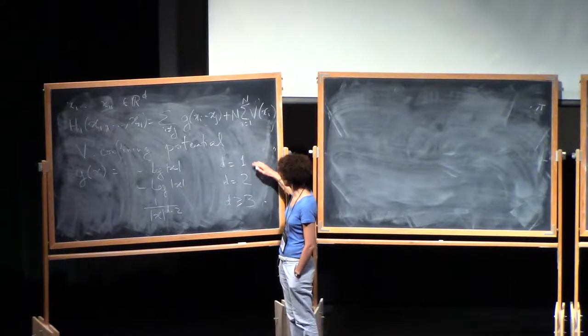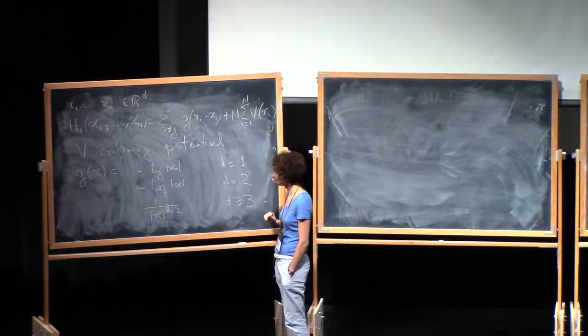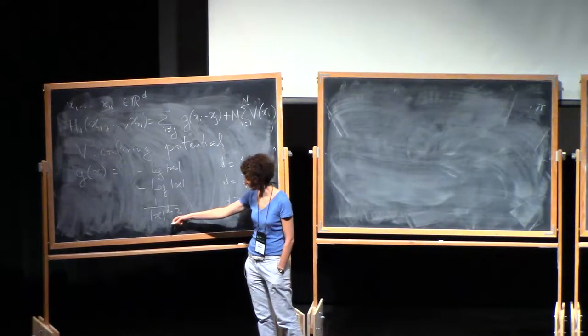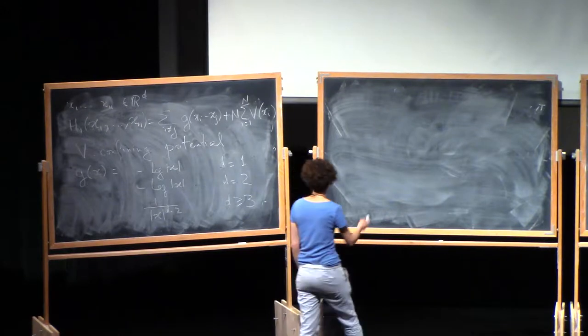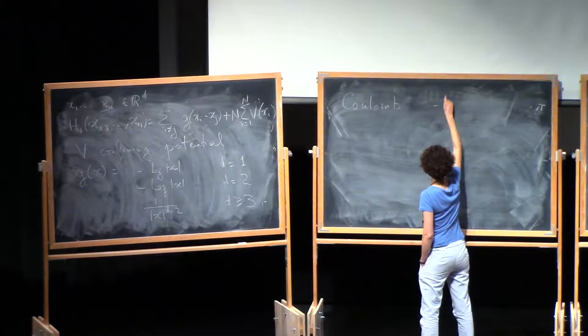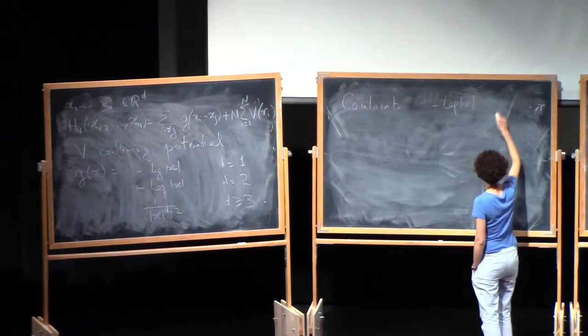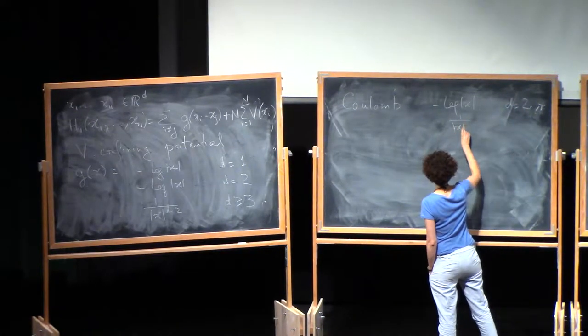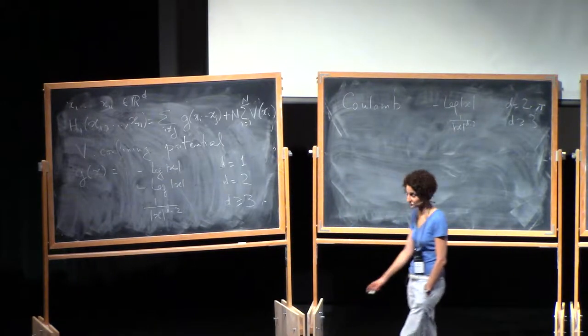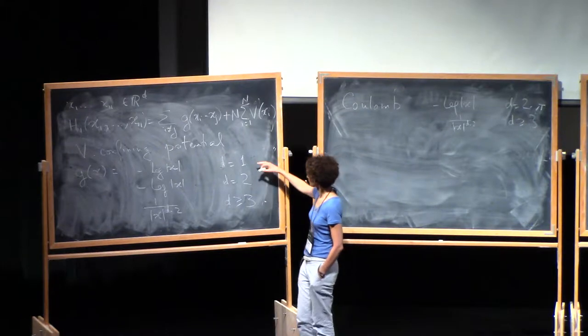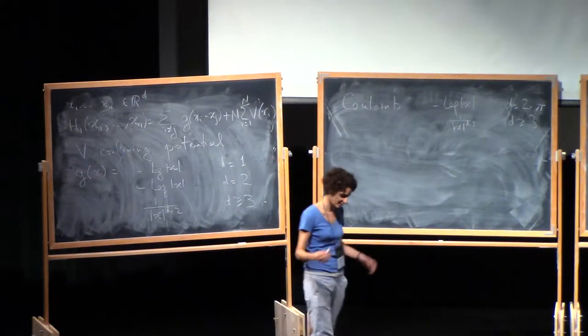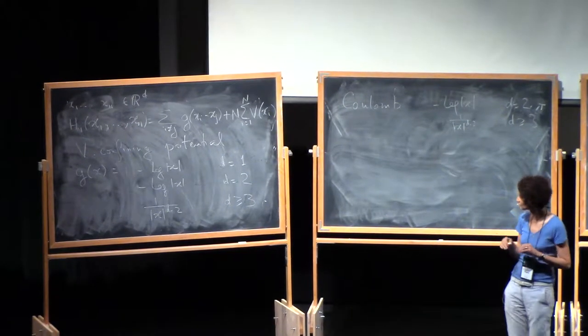So the first two cases I will call the logarithmic cases for obvious reasons. You can see that this 2D logarithmic case and the higher d case here correspond to Coulomb cases, because minus log is up to a constant the Coulomb kernel in 2D, and 1 over x to the d minus 2 is the Coulomb kernel in 3 and higher d. So the interaction between the particles is specifically Coulombic. And in dimension 1 there is something similar but a little bit different.